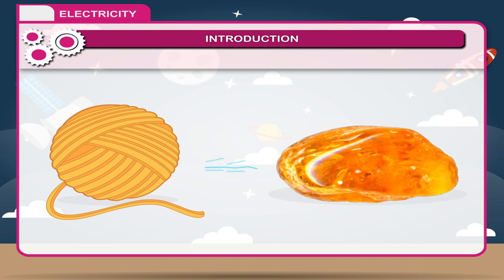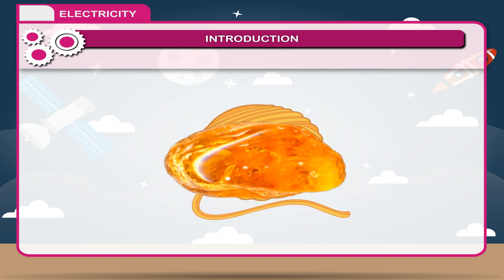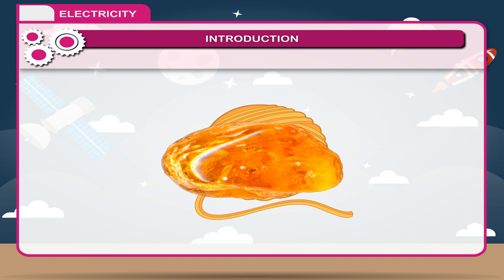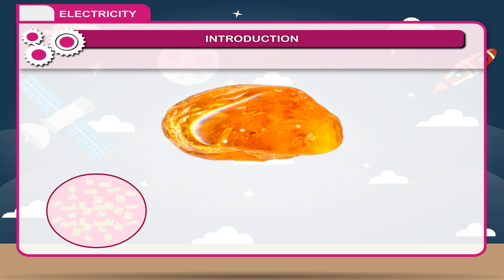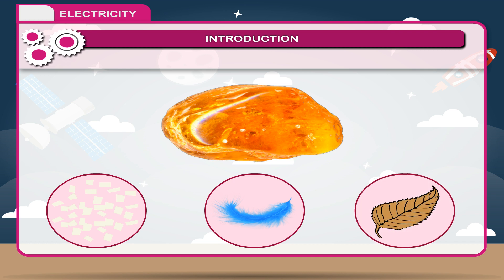Historically, electricity was initially produced with the help of friction. It is believed to have been discovered by Thales of Miletus, one of the seven wisemen of ancient Greece, in 600 BCE. He found that when amber is rubbed with wool, it develops a strange property of attracting small bits of paper, feather, and dry pieces of leaves towards itself. At that time, the phenomenon was not clear.